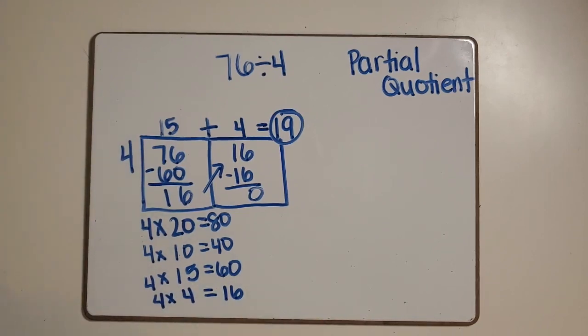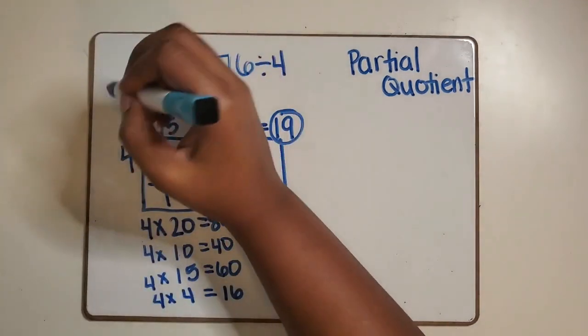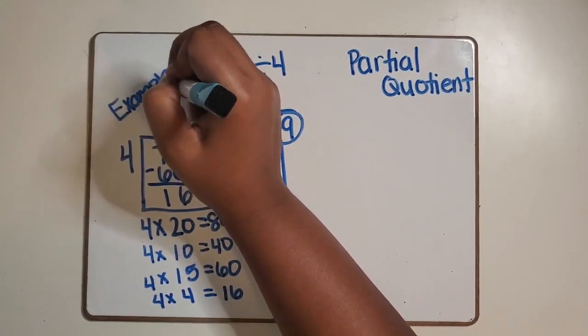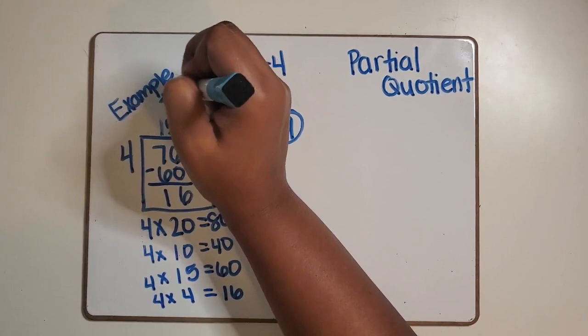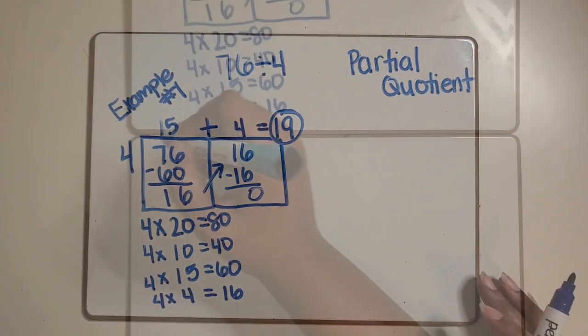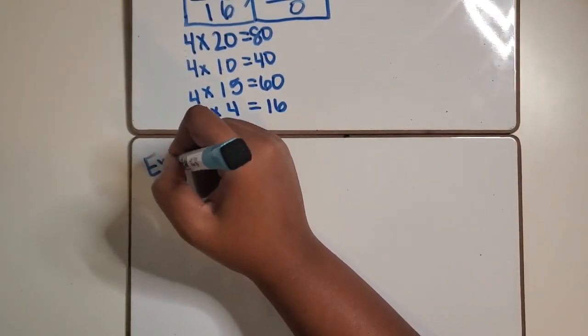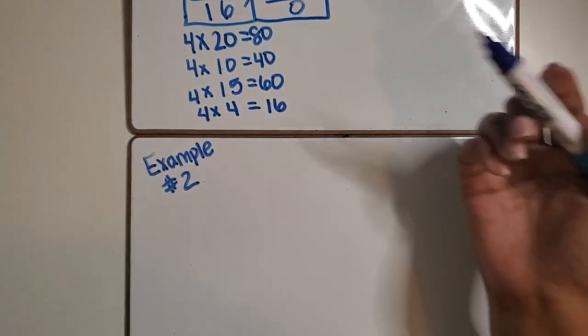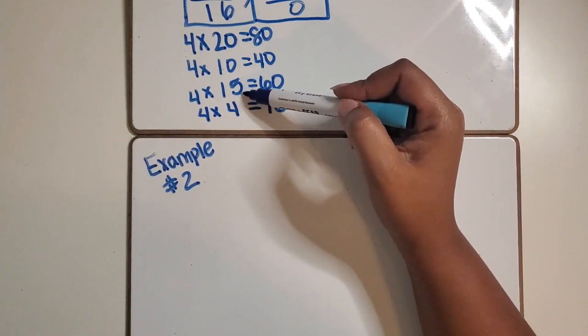That was one example of how a student may show how they solve the problem using the partial quotient strategy. Let's look at a second example of how a student may choose to show their work when using the partial quotient strategy.